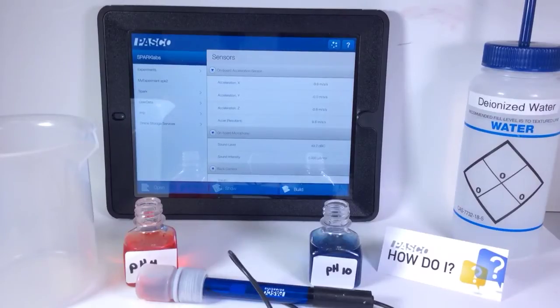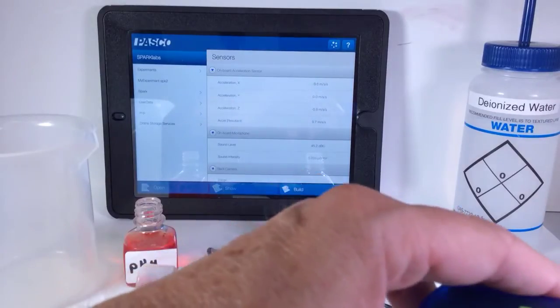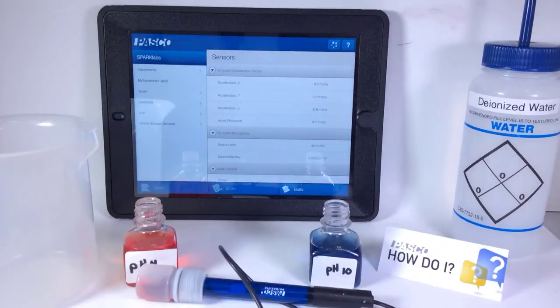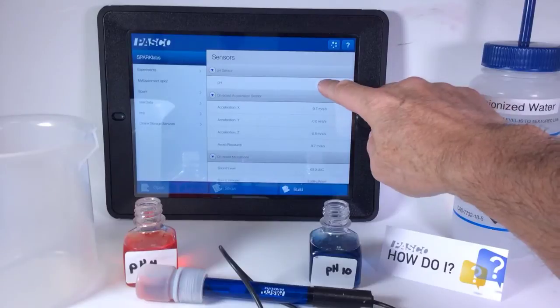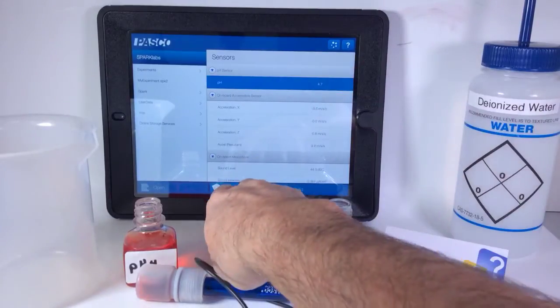How do I calibrate a pH sensor? First thing I'm going to do is plug the pH sensor into the interface. Then I notice that pH shows up. I'm going to tap that and hit the show path.